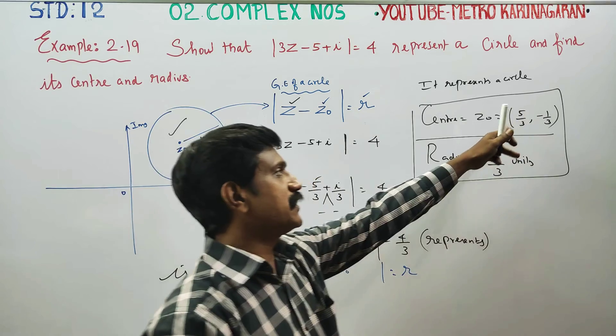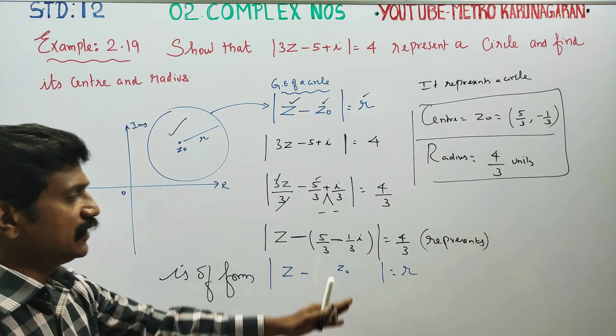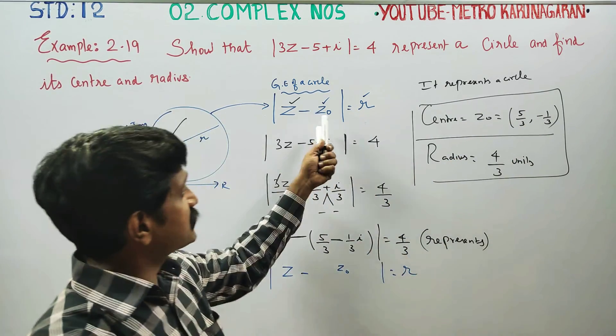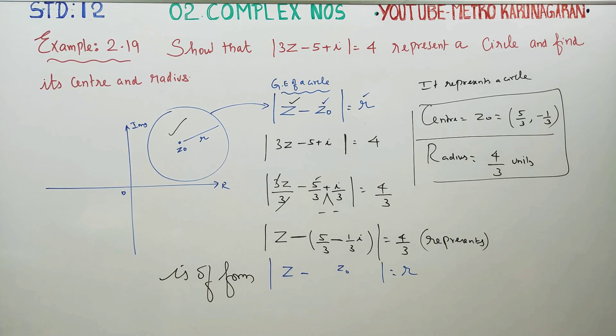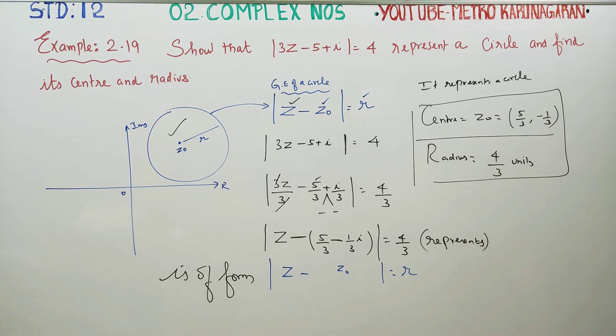At the analytical geometry, center is 5/3 minus 1/3 i, radius is equal to 4/3. |Z minus Z0| is equal to R, it represents equation of a circle in complex numbers. Thank you.